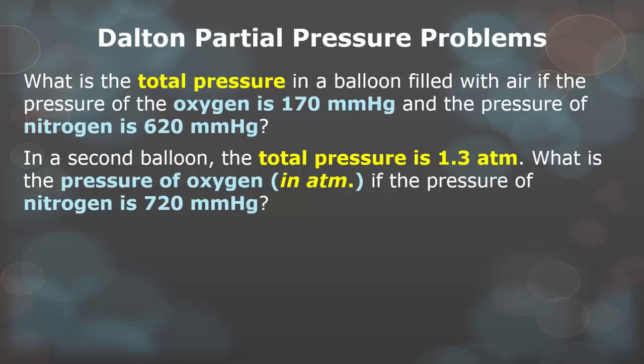So let's try this question. What is the total pressure in a balloon filled with air if the pressure of the oxygen is 170 millimeters of mercury and the pressure of nitrogen is 620? Well, for the first one, you just have to add the two together. 620 plus 170 gives you a total of 790 millimeters of mercury. That would be the entire pressure of the balloon. In our second balloon, the total pressure is 1.3 atmospheres. What is the pressure of oxygen in atmospheres if the pressure of nitrogen is 720? In this situation, you have to convert nitrogen's pressure into atmospheres. That means that nitrogen has a pressure of 0.9 atmospheres. Therefore, if nitrogen is 0.9 and your total is 1.3, you find the difference, which is 0.4, to tell you the pressure of just oxygen in atmospheres.